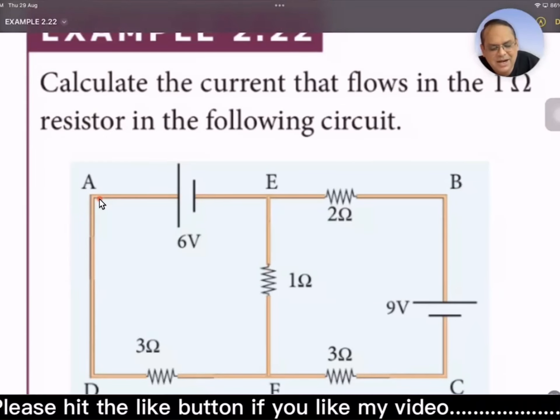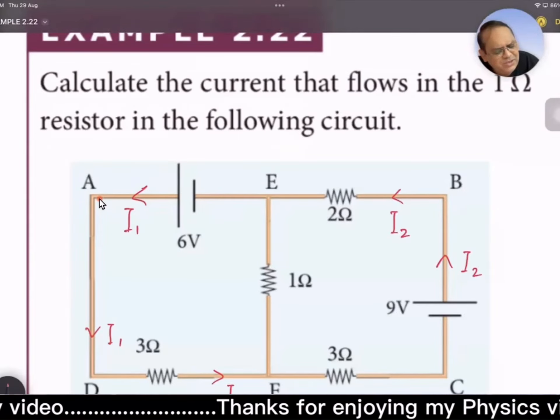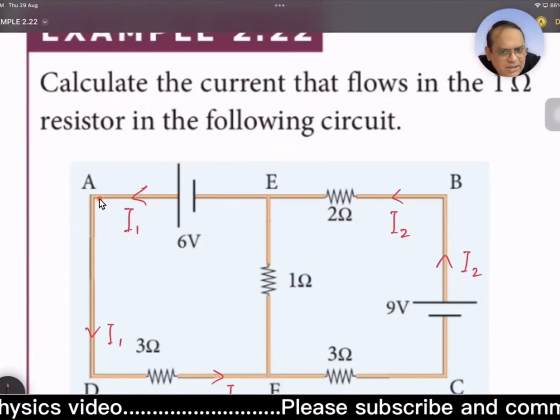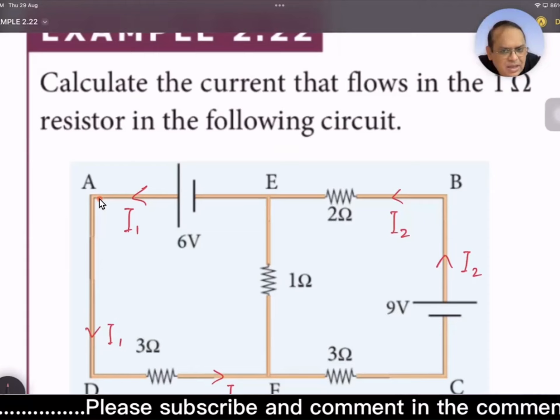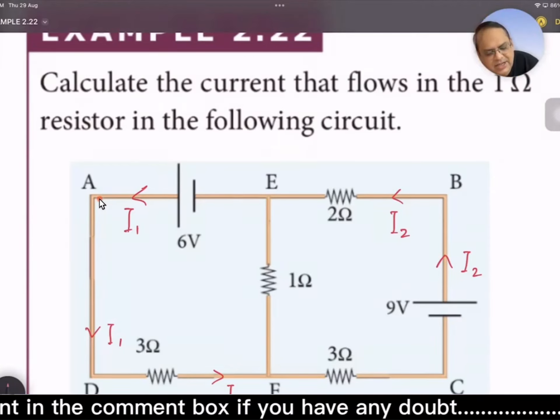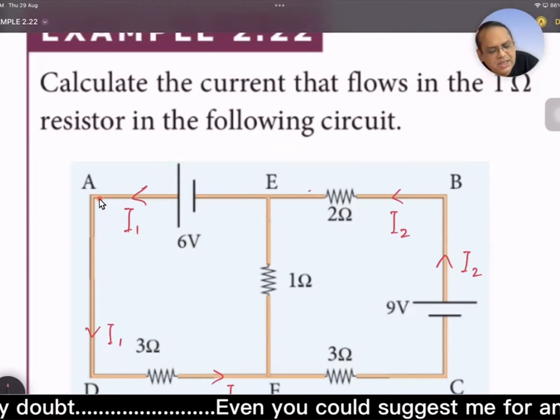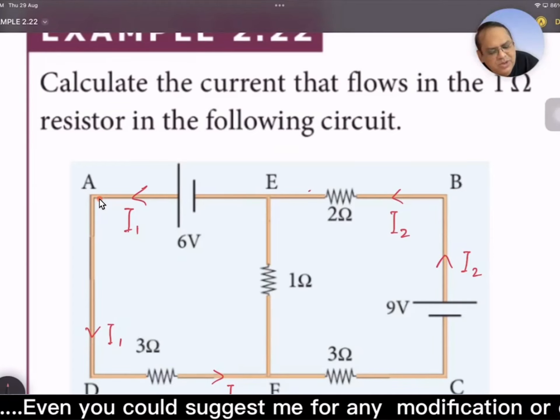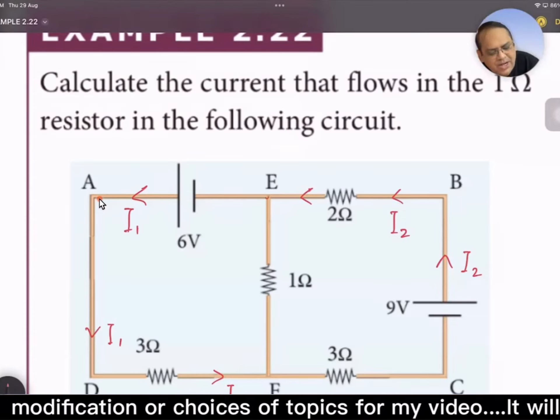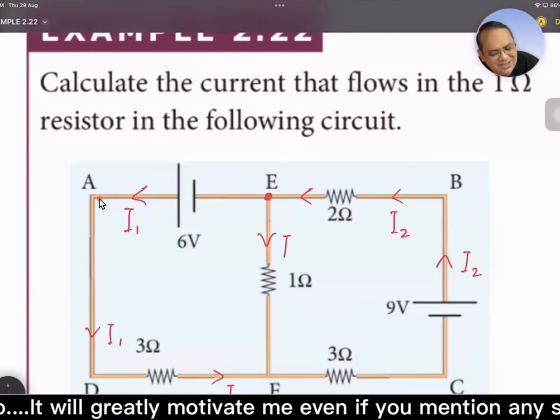Let's try to indicate at junction E. From junction rule, I₂ is equal to I₁ + I₃, which implies that I₃ = I₂ - I₁.